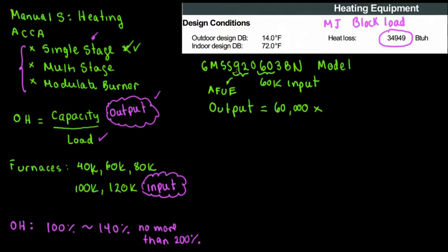In Goodman, that means this is a 60K furnace, 60K of input capacity, and this 92% represents the AFUE. For the calculation, we don't need the input, we need the output. The output is going to equal 60,000 BTUs per hour times the AFUE, which is 0.92. That's 55,200 BTUs per hour. This is the output capacity.